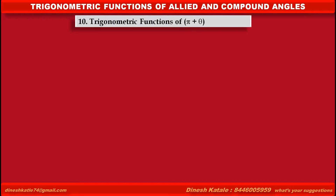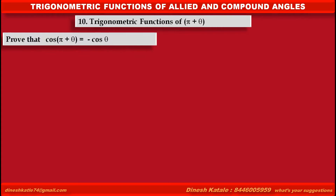Now, we have to learn trigonometric functions of pi minus theta. First, we have to prove that cos(π + θ) is equal to minus cos θ.